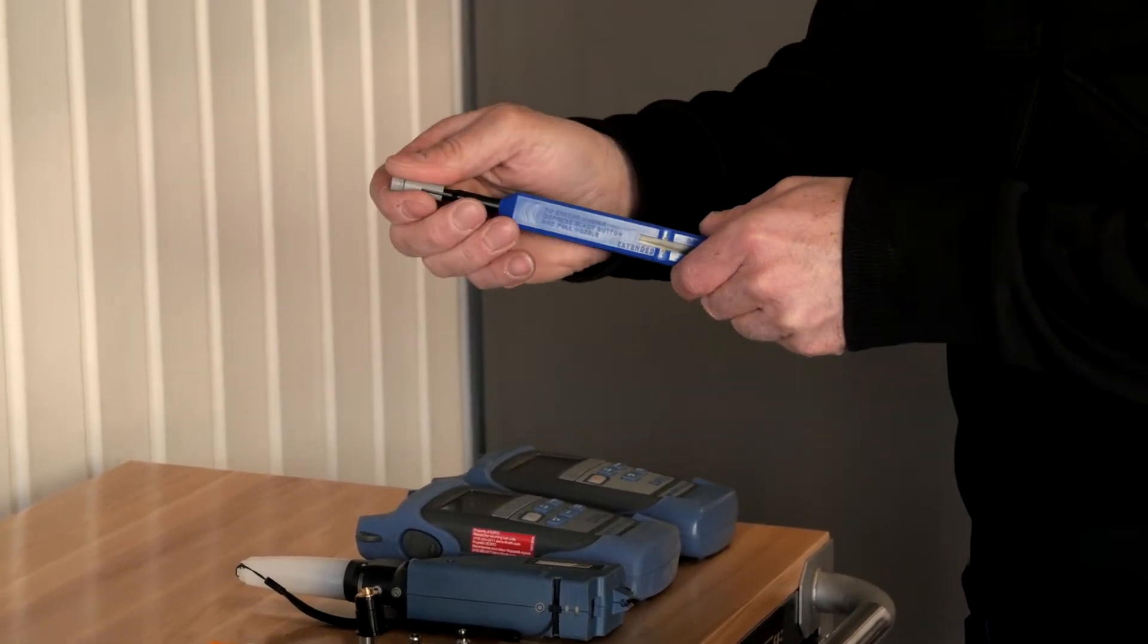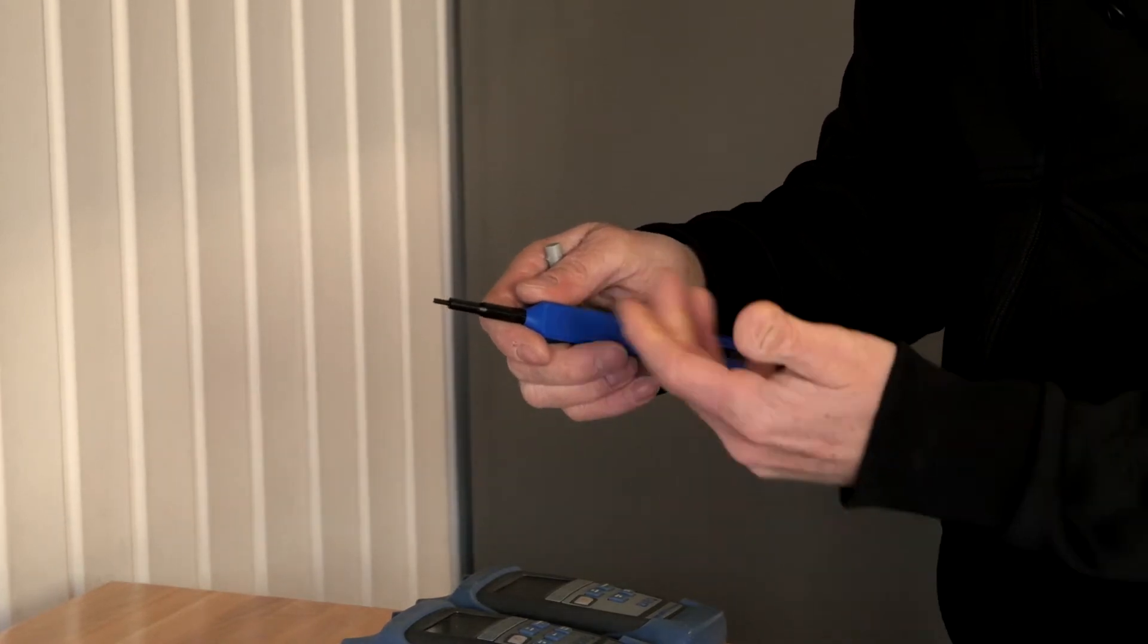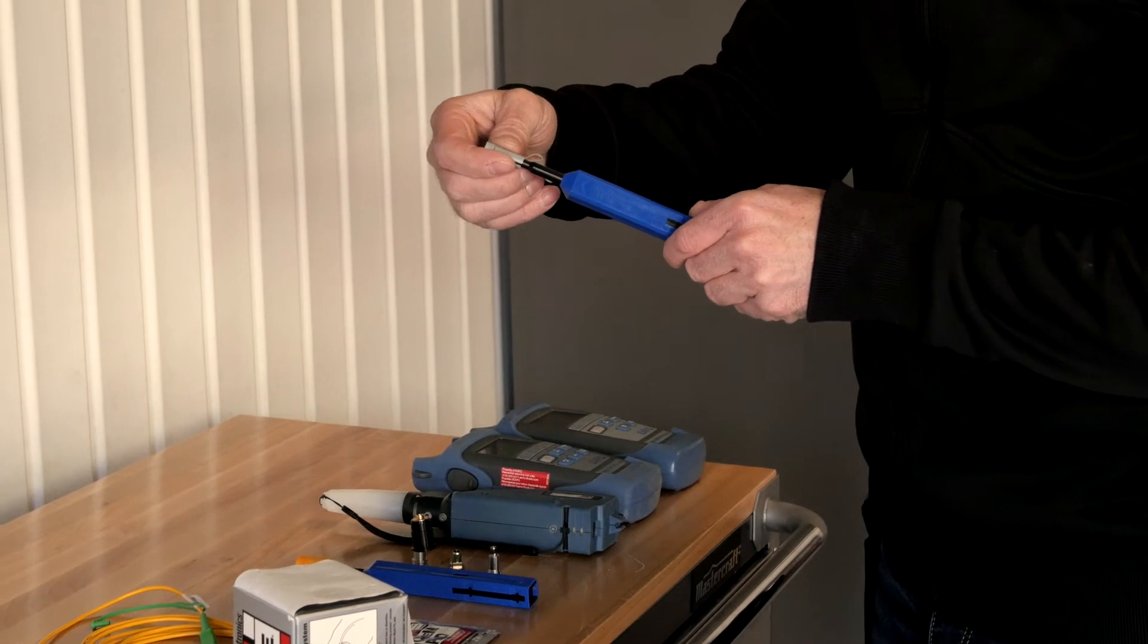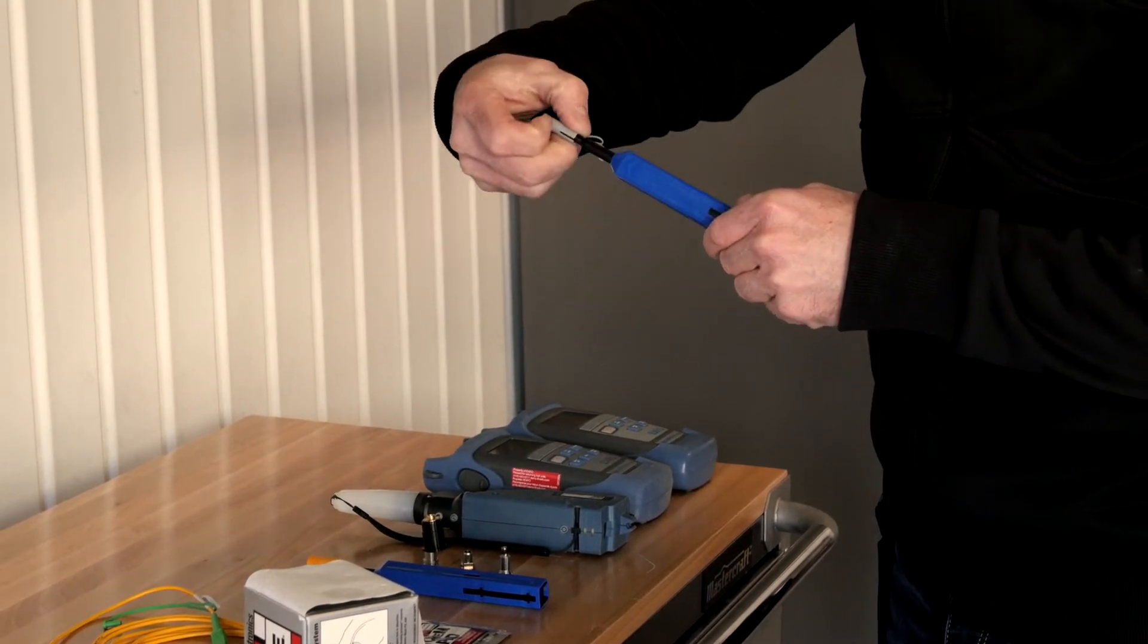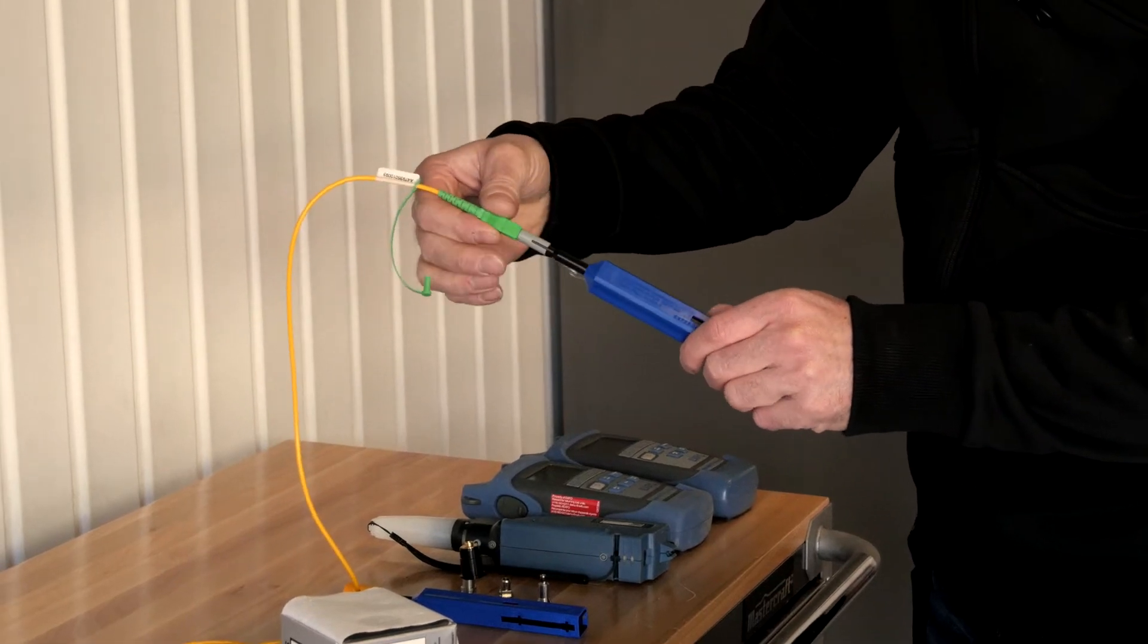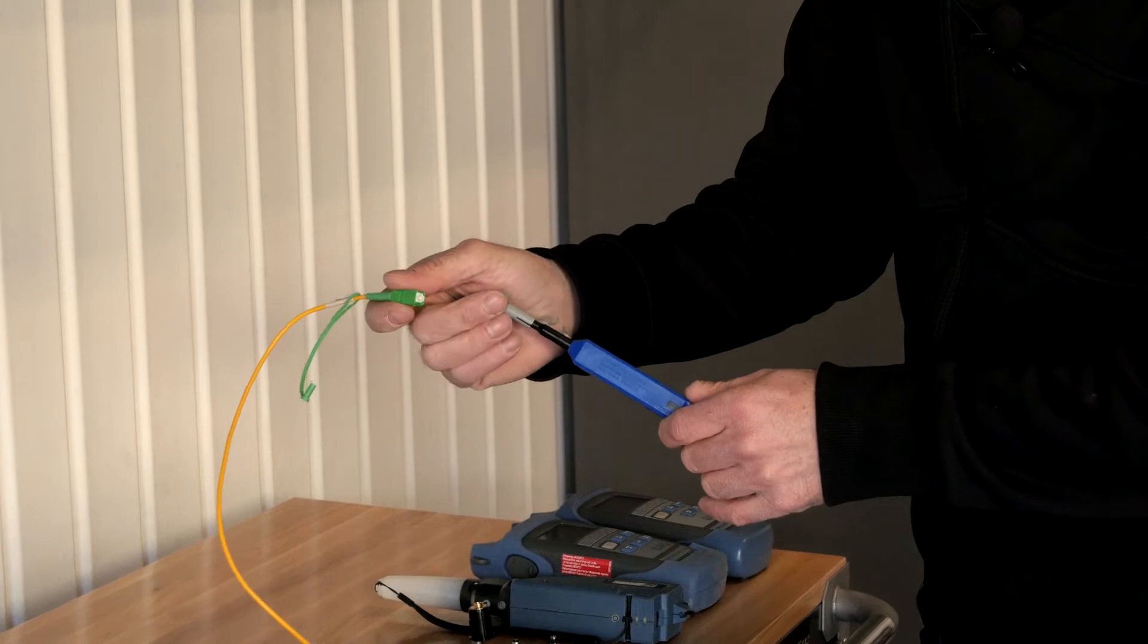You can clean the female port of the connector, so the bulkhead or the coupler if you will, using this tip. Or this little adapter here will convert this cleaner for jumper cleaning like this. Just click like this, and we actually clean the connector like that. Very simple.